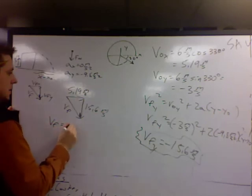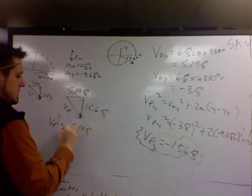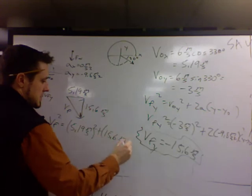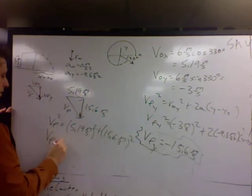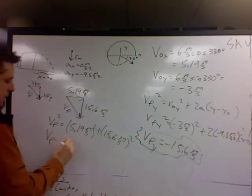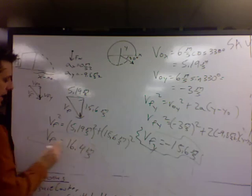So v final will equal the square root of 5.19 meters per second squared plus 15.6 meters per second squared. Or v final equals 16.4 meters per second. That's the how fast.